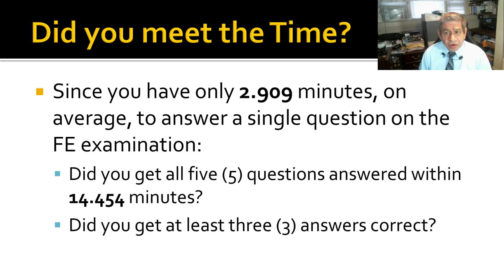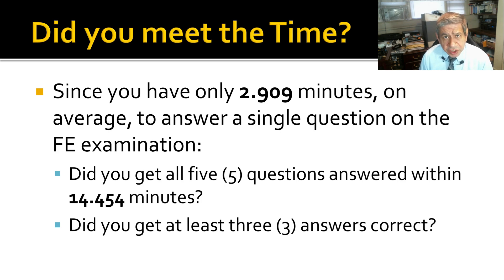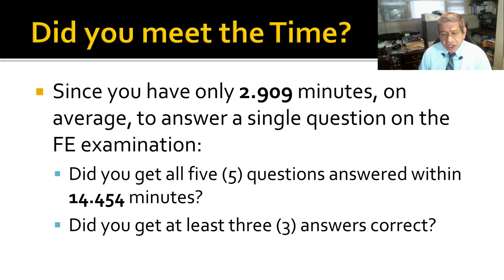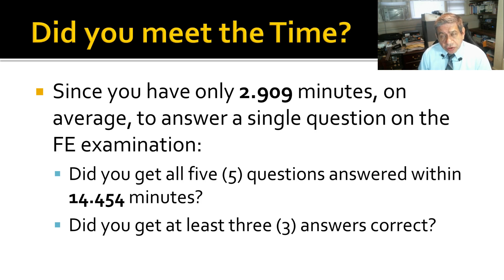Since you have only 2.9 minutes on average to answer a single question on the FE exam, did you get all 5 questions answered within the 14 and a half minutes? Did you get at least 3 answers correct? These were not difficult questions — you should have done this in significantly less time. Three correct answers would be a 60% achievement level, and most everybody who has worked with the FE exam has concluded that if you get 60%, you will pass that test.